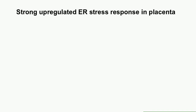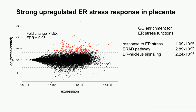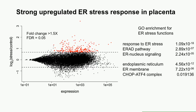The first thing we looked at was what genes are upregulated by ER stress in the placenta. Here's a plot showing log2 fold change between stress and control samples versus expression level. In red are genes upregulated one-and-a-half-fold or more at an FDR of 5%. GO analysis of these upregulated genes found enrichment for response to ER stress and other ER stress-related functions, with gene products functioning in the endoplasmic reticulum and its membrane — a nice proof of principle that the treatment is working.